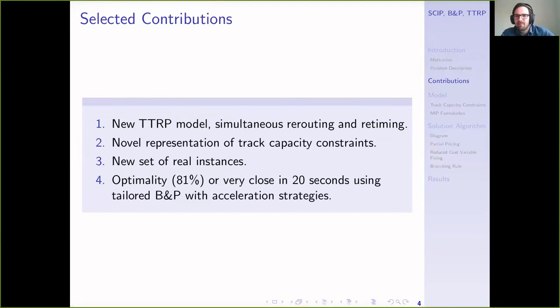This problem has been pretty well studied with many good contributions in the literature already. But I want to highlight four contributions of our research. We're proposing a new model for the TTRP which carries out rerouting and retiming simultaneously. The model has a novel representation of track capacity constraints. We've created a new set of real instances and tested our method. We found we could solve 81% of instances to optimality in 20 seconds with very small gaps in the remainder using our tailored branch and price algorithm with acceleration strategies.